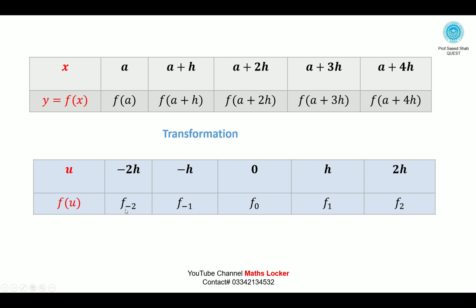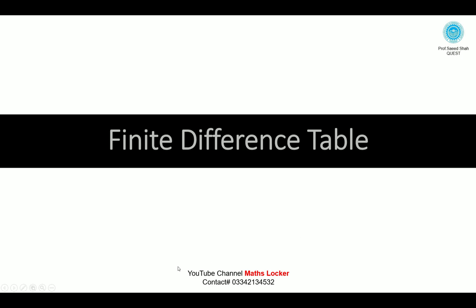Mapping the function notation: f(a−2h) becomes f(−2), f(a+h) becomes f(−1) since here we have −1, and u=0 corresponds to f(0). We build the finite difference table accordingly.